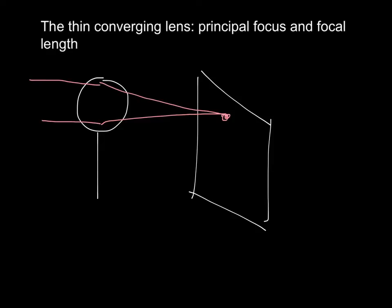It turns out these lenses, apart from burning things, are useful for a lot of other stuff. The first thing we realize is that they take two rays that are coming parallel to each other and project them into one point. This point is called the principal focus of the lens.